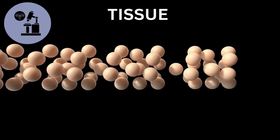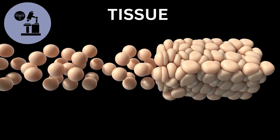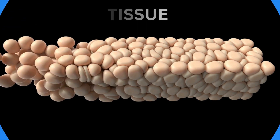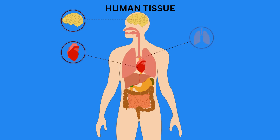Tissue is a group or layer of cells that work together to perform a specific function in the body. In multicellular organisms, tissues are organized into higher levels of structure, such as organs and organ systems, and they play a fundamental role in the overall functioning and maintenance of the organism.